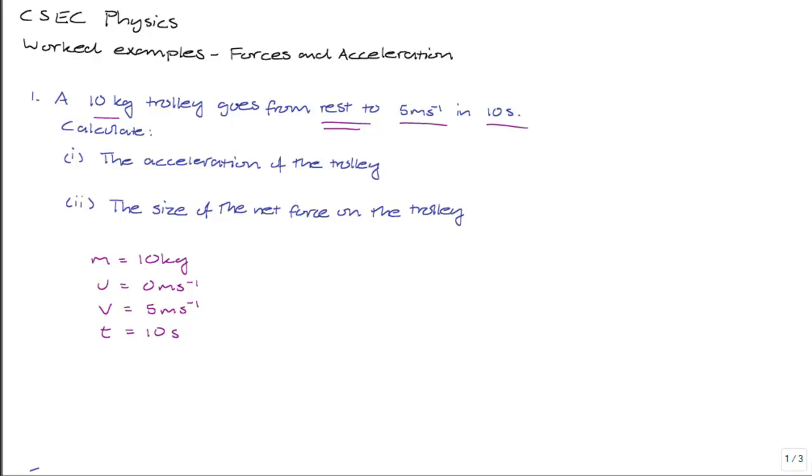So the first thing we're asked to work out is the acceleration of the trolley. Now acceleration is equal to the rate of change of velocity. So A is equal to delta V divided by T or change in velocity V minus U divided by T. If you substitute in your values,